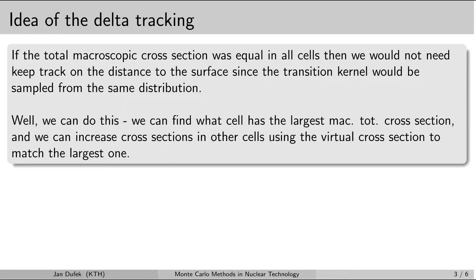When all cells in the system have material with the same total macroscopic cross-section, the distance between collisions is sampled from the same distribution throughout the whole system, so we no longer need to calculate the distance to the interface.